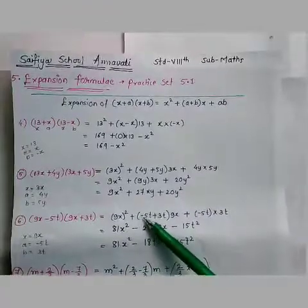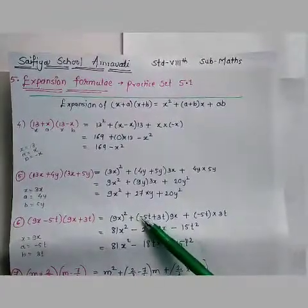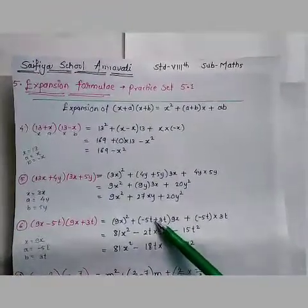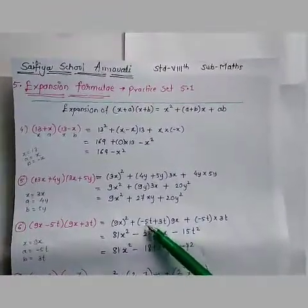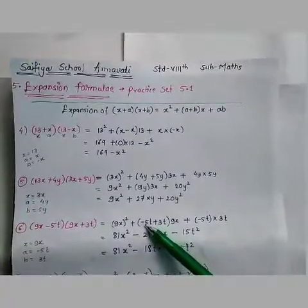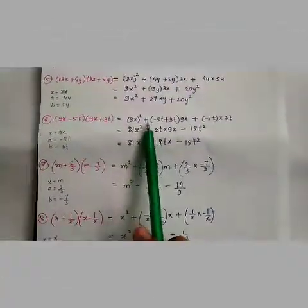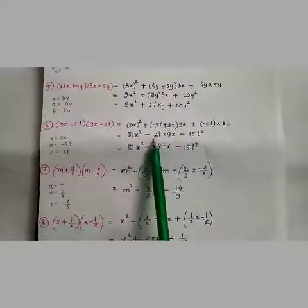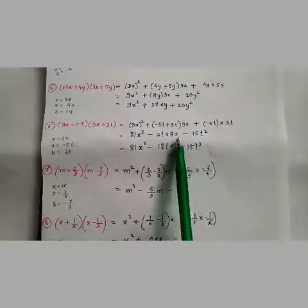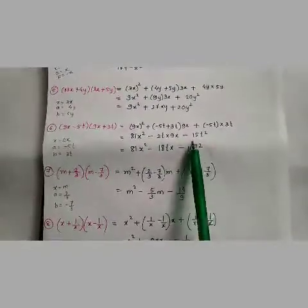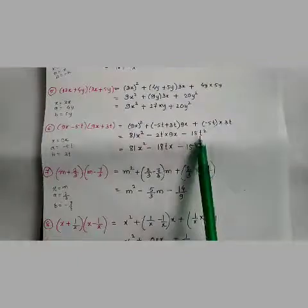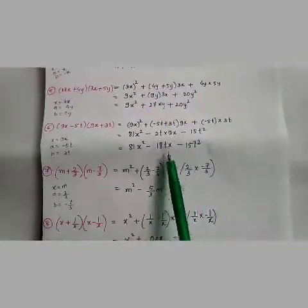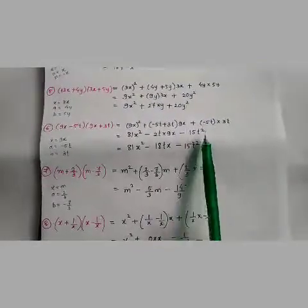9² is 81, x² is x². For a+b: minus 5t plus 3t — plus minus is minus, 5 minus 3 is 2 and the bigger one is 5, so we take the sign of minus: minus 5 + 3 is minus 2t, into 9x gives minus 18tx. For a×b: minus 5t × 3t — plus minus is minus, 5×3 is 15, so minus 15t². Final answer: 81x² - 18tx - 15t².